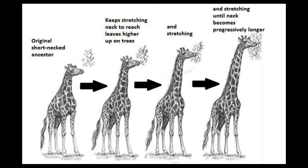The most famous rendition of Lamarck's theory involves the giraffe. Originally, according to Lamarck, the ancestors of giraffes had short necks. But because they kept stretching to reach higher leaves on trees, their necks eventually grew longer, and their offspring inherited that characteristic.